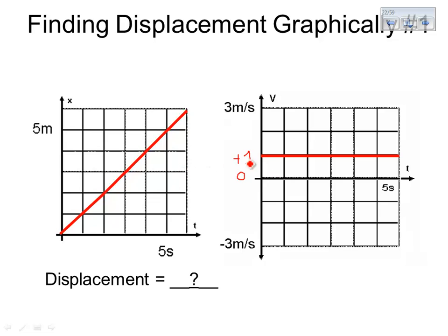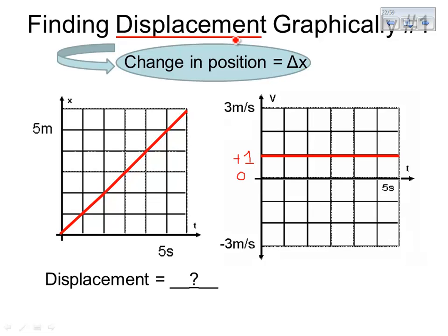From each representation, we should be able to define or find displacement. Just to remind you, displacement means change in position — how much an object changes position. Our shorthand notation for this is delta x. That triangle means 'change in,' so delta x means change in position.